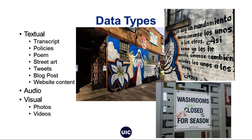When we think about different data types, mostly people think about words in a Word document that are analyzed, but data can be textual, audio, or visual. A friend of mine just did an arts-based performance, which you could envision looking across a lot of different performance arts as data and looking for patterns across them. So qualitative data is very diverse — there are lots of different kinds.